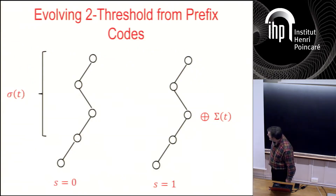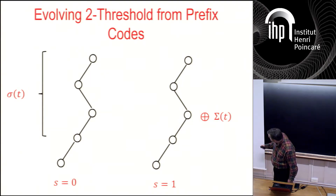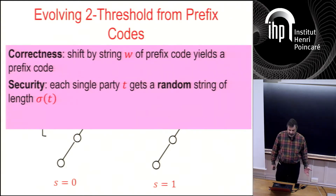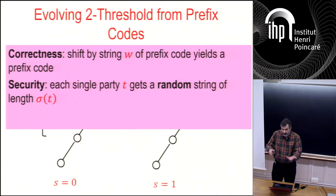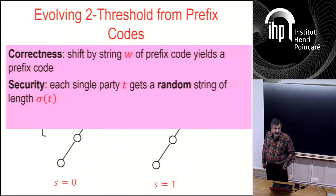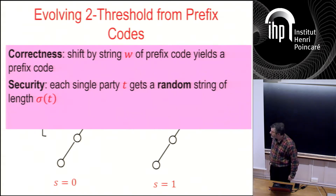For correctness: a shift by a string w of a prefix code yields a prefix code. If two things were prefix-free and you XOR both with the same string, they remain prefix-free. So 0 is decoded as 0 and 1 is decoded as 1. For security: each string in itself is random — the share that party t gets is a random string of length σ(t). The share size is log t + log log t etc., using the best code.